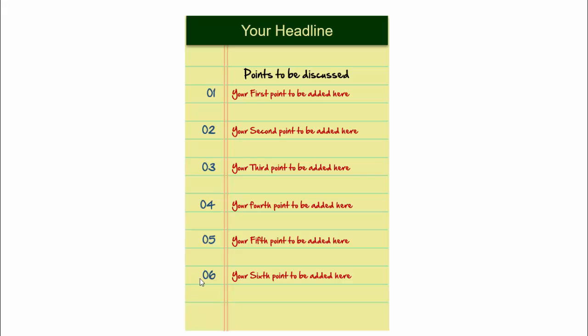I have put six options here. For each option, you can put the option number and then add the title. In the subsequent pages, I have given the details of each and every point. When I click, this page will go off and the detail page of that option will appear.